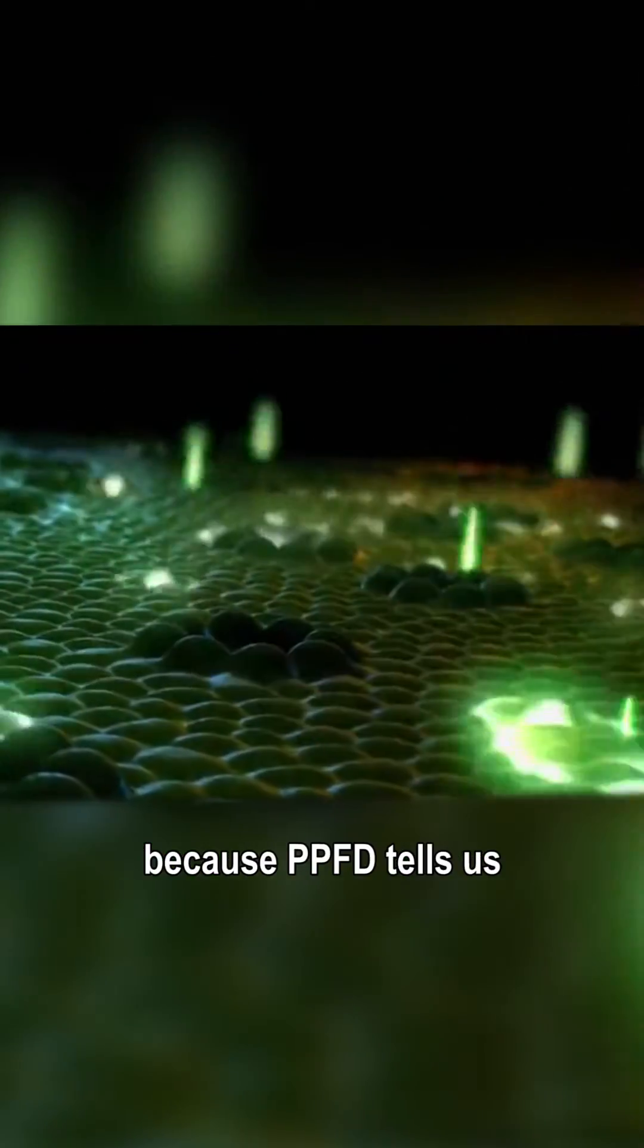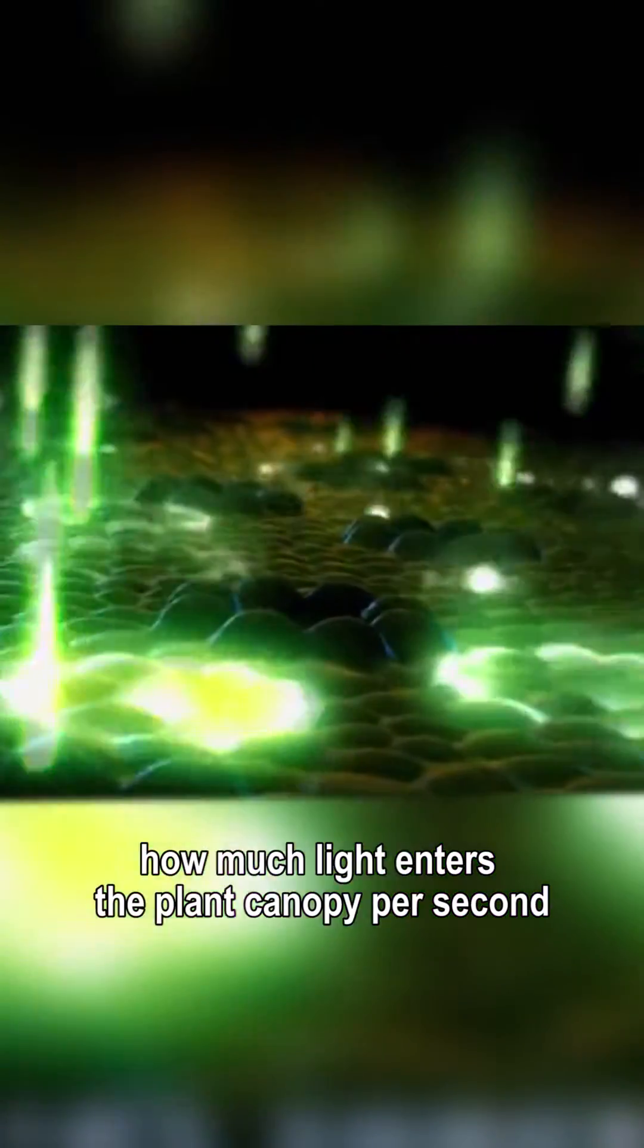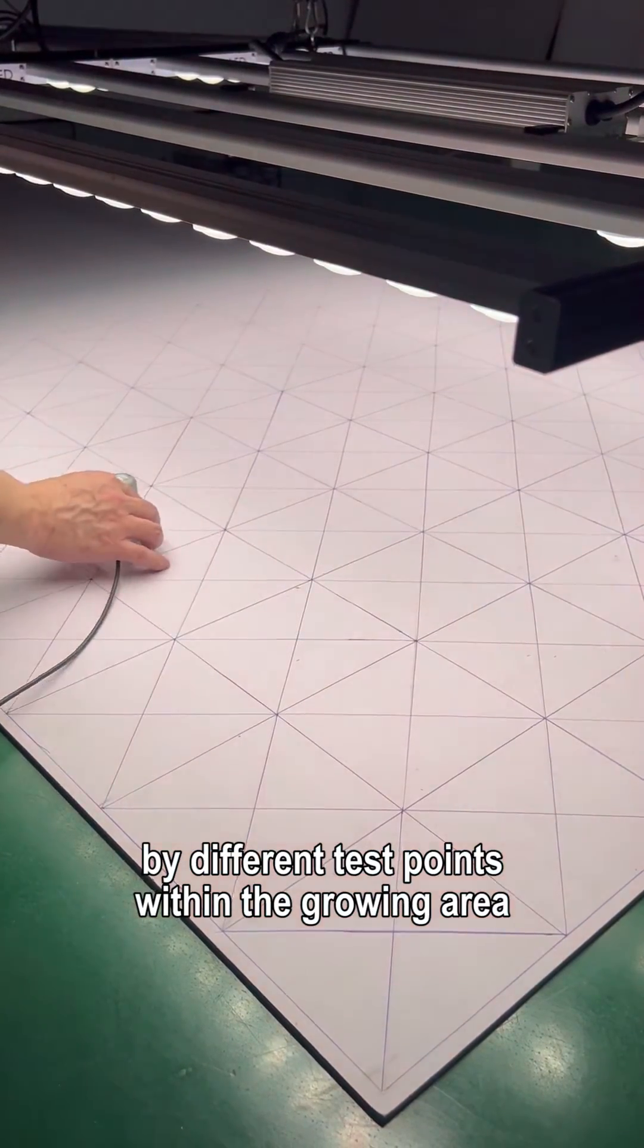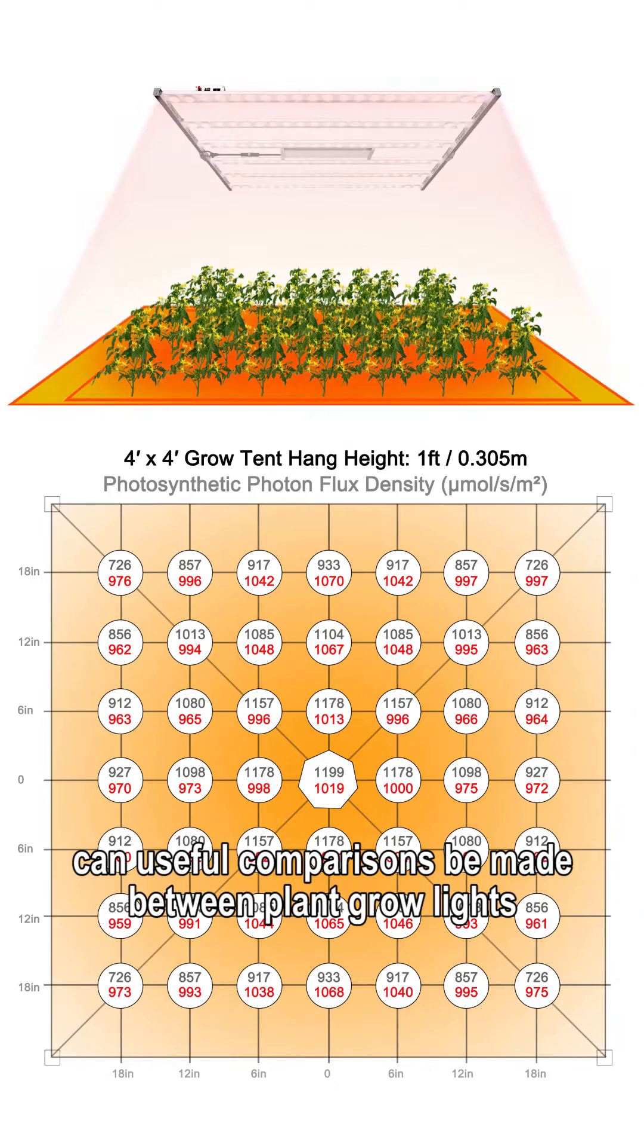In the market of grow lights, PPFD tells us how much light enters the plant canopy per second. Only by measuring the PPFD maps formed by different test points within the growing area can useful comparisons be made between plant grow lights.